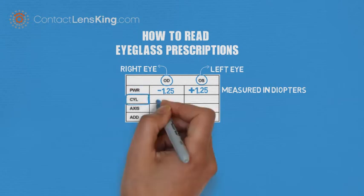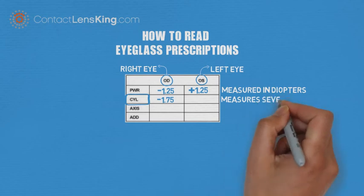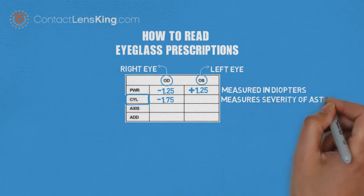Cylinder. This number illustrates the severity of astigmatism at a particular degree axis in the eye.